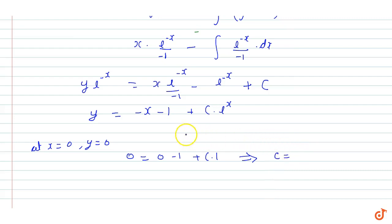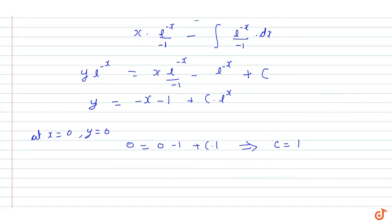So if we replace c equals 1 in the equation, then our equation will be y plus x plus 1 is equal to e to the power x, because we have taken minus x and minus 1 from right hand side to left hand side. So this is our final solution of the differential equation.